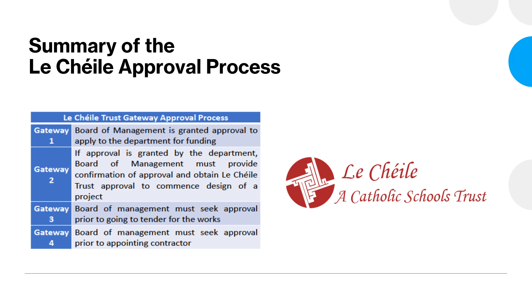Gateway 2 is where patron approval must be obtained prior to commencing design of the project. In Gateway 3, permission must be obtained prior to going to tender for the works. And with Gateway 4, approval must be obtained prior to appointing a contractor. While in practice it is likely to be the principal who communicates with Sheil in relation to these, it should be noted that in each case it is the responsibility of the Board of Management to ensure these procedures are followed.